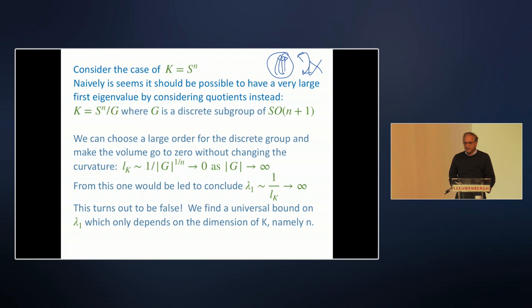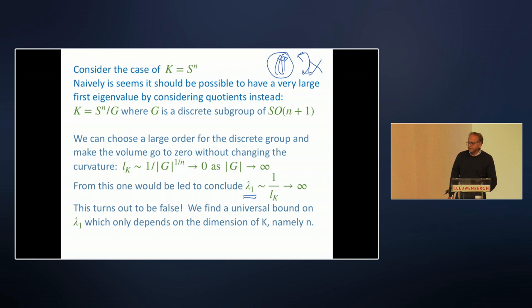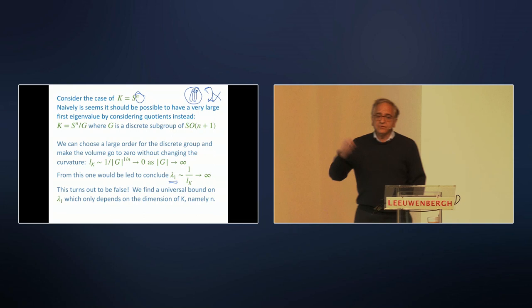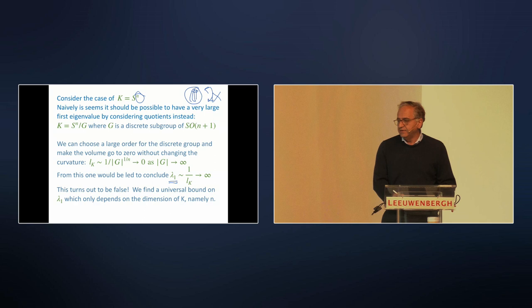One might think higher-dimensional cases with more interesting group actions could reduce the diameter further. In fact, for the first eigenvalue of the Laplacian on arbitrary group quotients of the sphere, you can show it can never be made arbitrarily large. More than that, the first eigenvalue has a definite value given only by the dimension of the space. For any subgroup of SO(n+1), regardless of whether it preserves supersymmetry or has fixed points, the diameter is always bounded below, so the first eigenvalue cannot be made arbitrarily large.